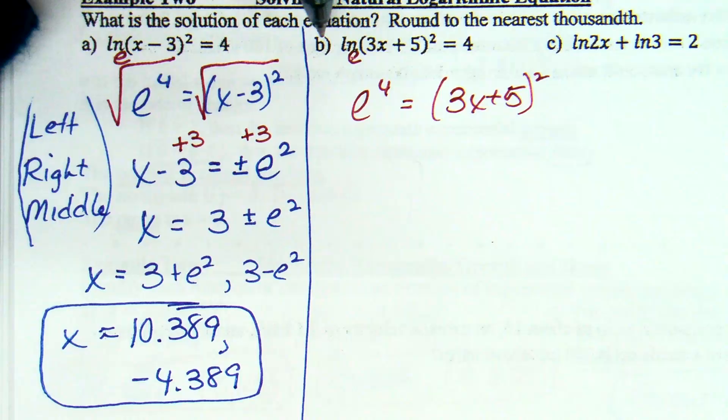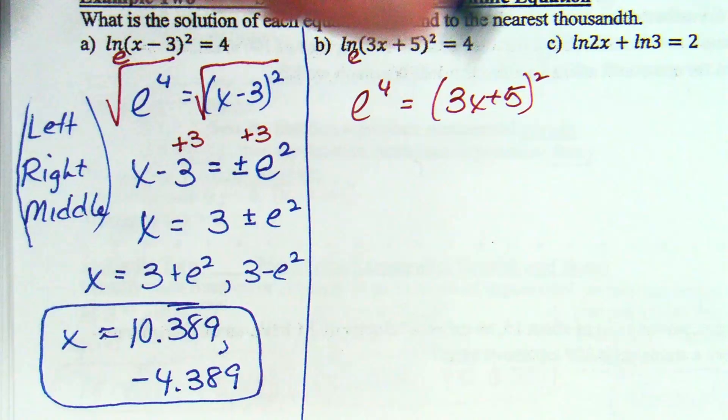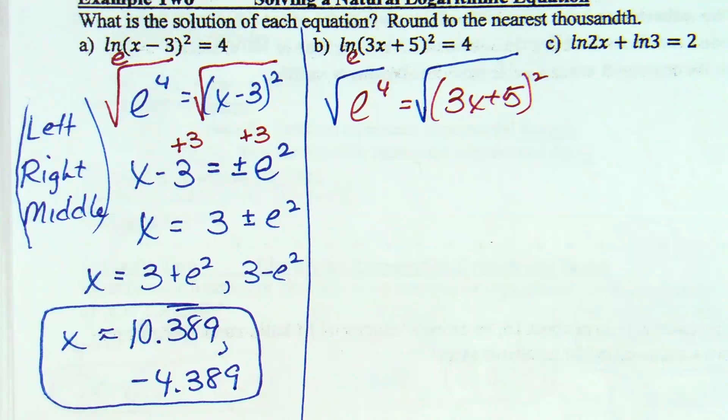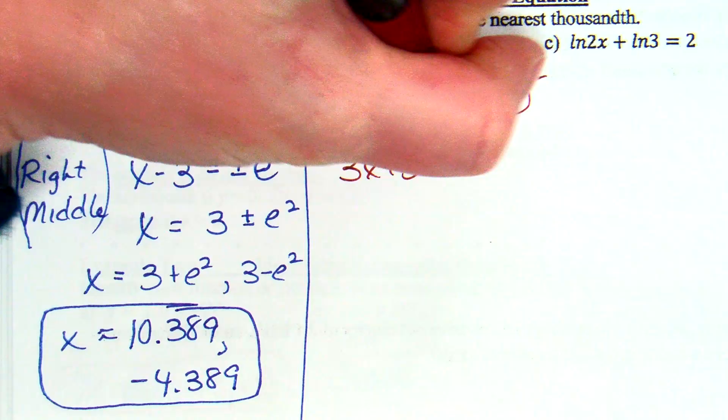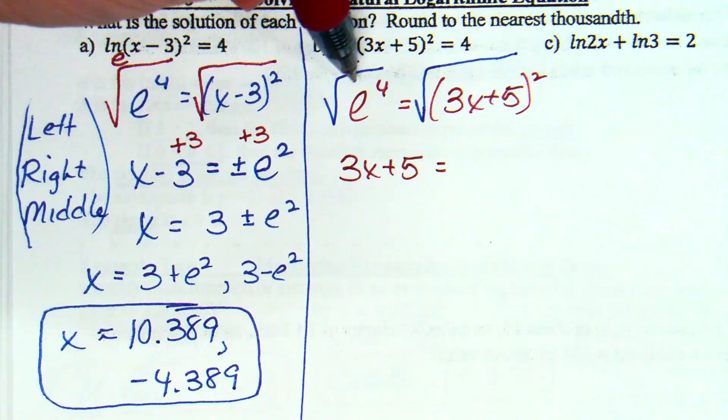Okay, are we okay with left right middle there? E to the 4th equals 3x plus 5 squared. Okay, how do I solve for that x? If I square root the right, square root the left. What is the square root of 3x plus 5 squared? 3x plus 5. E squared. I was coughing. What is the square root of E to the 4th? Okay, we take a square root, divide by 2, so E squared. When you square root in an equation setting? Plus or minus. So 3x plus 5 equals plus or minus E squared? Yes.